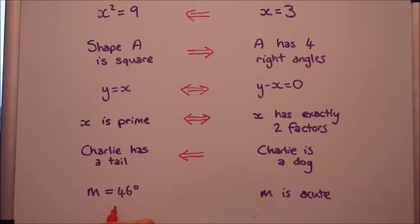Last one then. If m = 46°, does that mean it's acute? Yeah, that's fine. I'm happy with that. But if m is acute, that doesn't mean necessarily that it's 46 degrees. It could be any other angle less than 90. So it doesn't go back the other way. It's just the forward implication.